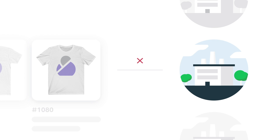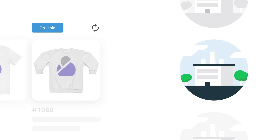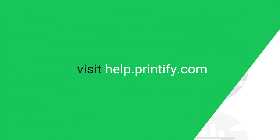If no substitute is found at all, the order will remain on hold until you take further action. In this case, you can either manually switch the product to something else or cancel the order entirely. For more information on this feature, check out our Help Center article — link in the description.